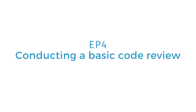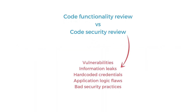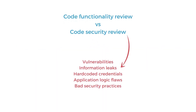You're probably already familiar with the code functionality review, where you verify if a functionality in your application behaves as it should. In contrast, in a security code review, we are specifically looking for pieces of code that will lead to security vulnerabilities — common vulnerabilities like cross-site scripting, SQL injection, or bugs like sensitive information leak or hard-coded credentials, or application logic issues that can have a negative impact on your application, its users, or your business.